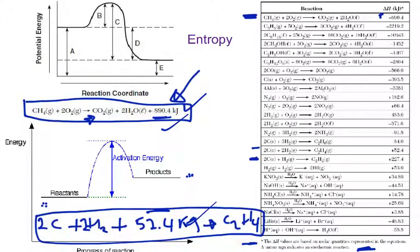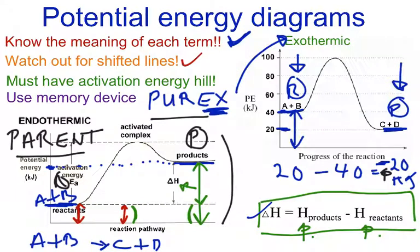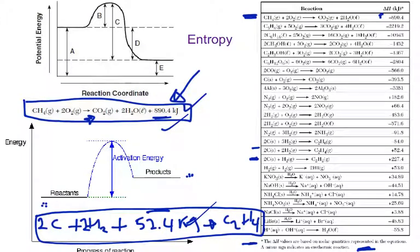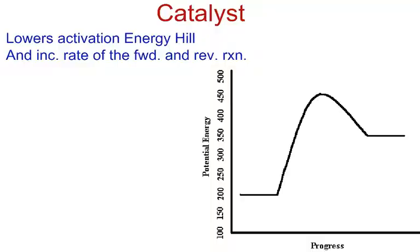All potential energy diagrams have an activation energy hill. There's a hill right here, and there's a hill right here. If the diagram they give you on the test or quiz doesn't have an activation energy hill, it's not a potential energy diagram. That's very important.